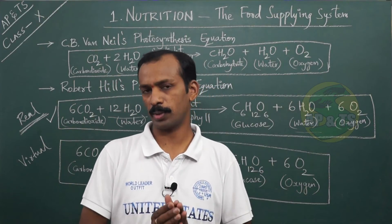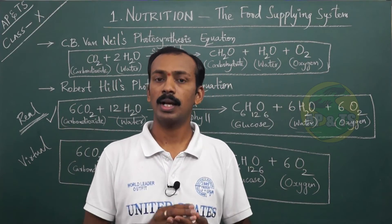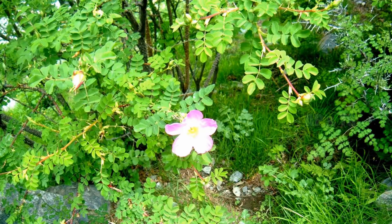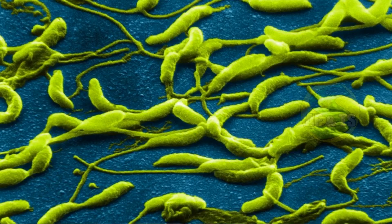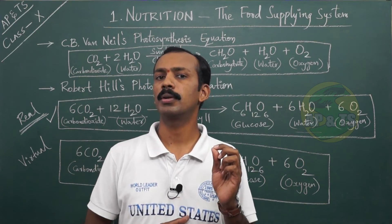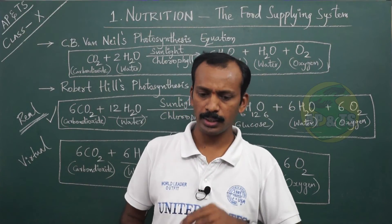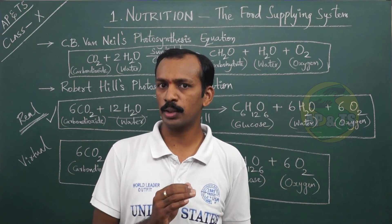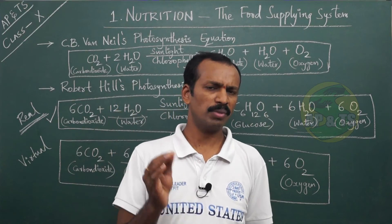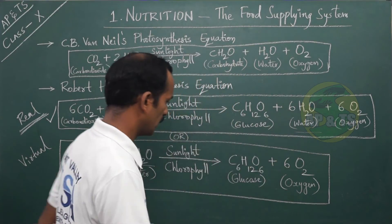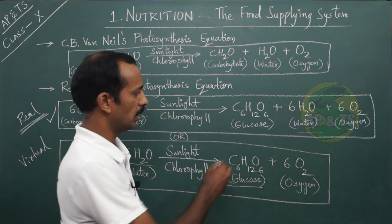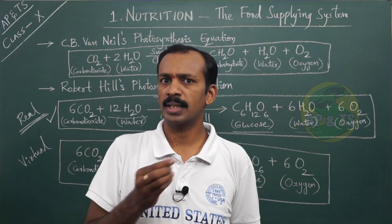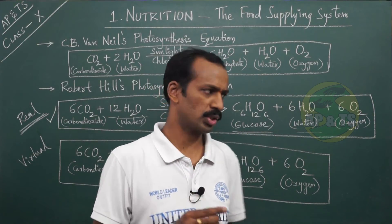Photosynthesis is performed by autotrophs. Examples of autotrophs are plants, algae, and photosynthetic bacteria. Plants prepare their own food and food for others as well. The ultimate food they produce is glucose. Later, plants convert this glucose into other forms like starch, which is a complex carbohydrate, while glucose is a simple carbohydrate.